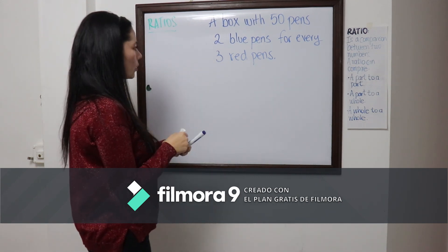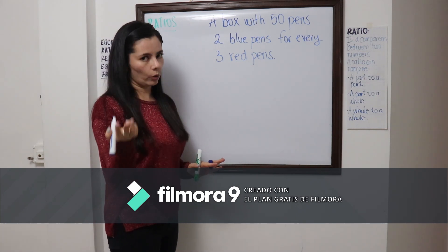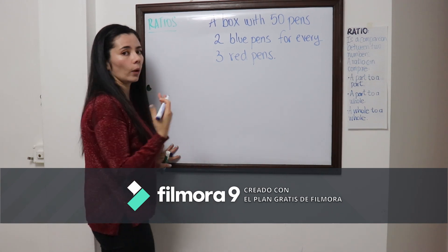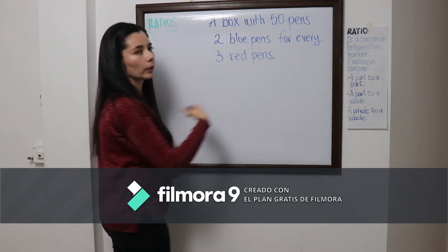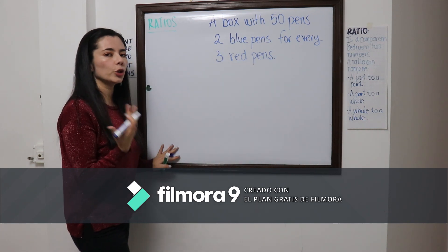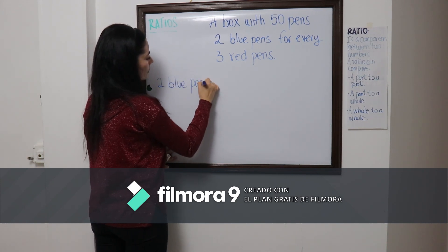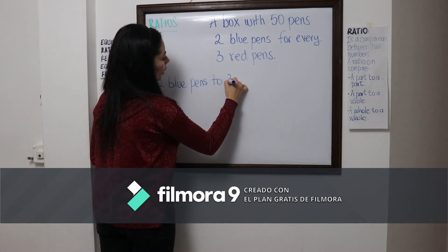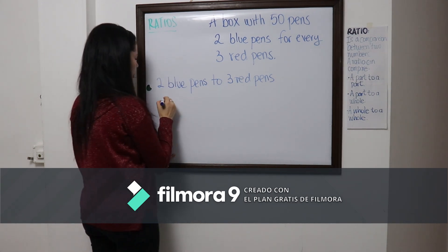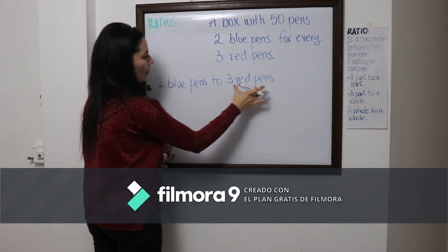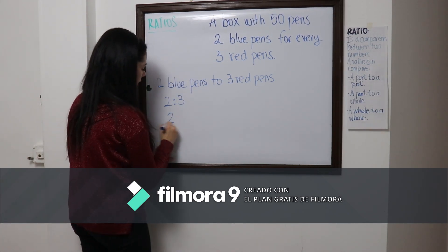We're comparing a part to a part from the same total, which is the box. We could actually write it down in three ways. We can write it down in words — we say 'two blue pants to three red pants.' Another way is just to use the numbers, or as a fraction.